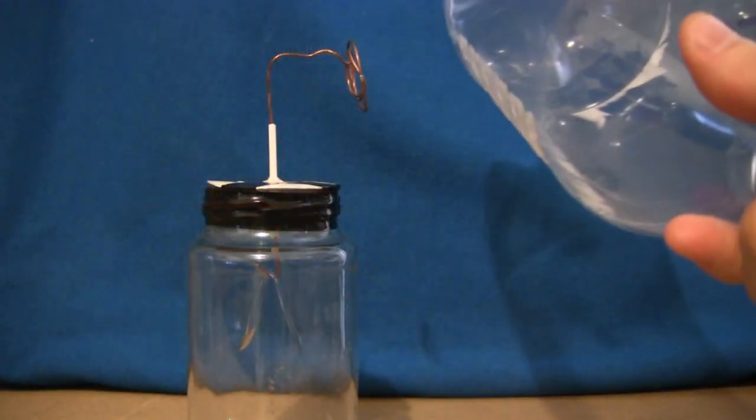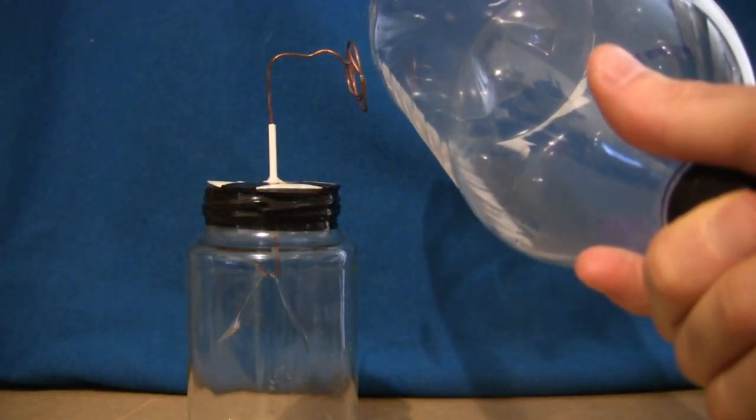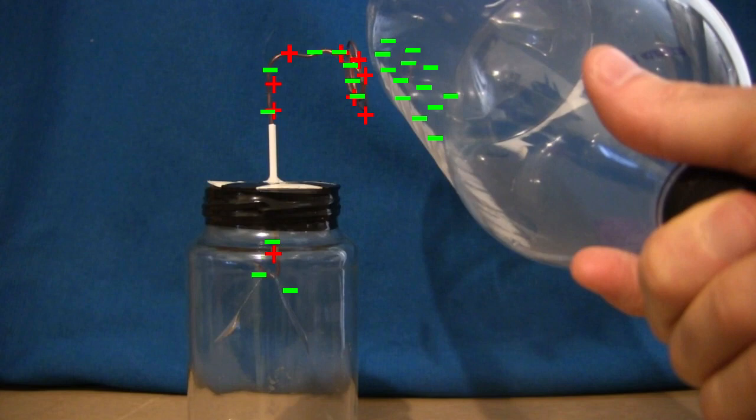If we bring our negatively charged coke bottle near the terminal of our electroscope, then it will repel electrons from the terminal down to the leafs. Electrons are negatively charged.